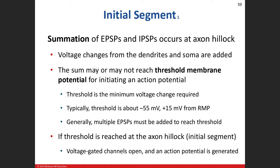Does anyone remember what the threshold value is? That's right — negative 55 millivolts. Normally our resting membrane potential is at negative 70. So we need to get it to negative 55 — a difference of 15 millivolts. Our goal is to generate enough EPSPs, the excitatory post-synaptic potentials, strong enough to get that value down to negative 55 millivolts.